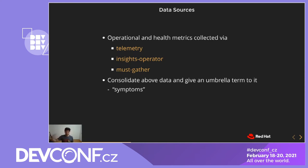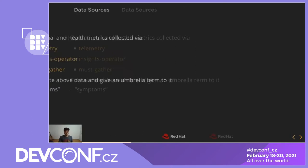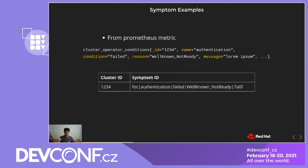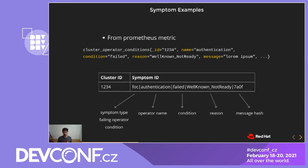A symptom basically refers to any problem with the cluster. For example, if there's a Prometheus metric that tells you the conditions of the operators deployed on your cluster, what the CCX pipeline would do is parse through this metric and store it as a symptom. A symptom gets saved as essentially one string that stores all the main parts of the original data source. For example, this particular string shows that it's a failing operator with the operator name, condition, and the message associated with the condition. So you've essentially distilled all the main bits from the original source and saved it as one piece of string.